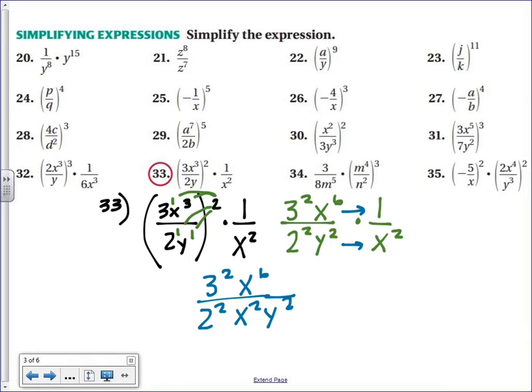Are there any like terms or any terms with the same base? Well, yes. There's x to the 6th and x squared. And because we're dividing, we subtract the exponents. So that means I have 3 squared, and 6 minus 2 is 4, so x to the 4th.